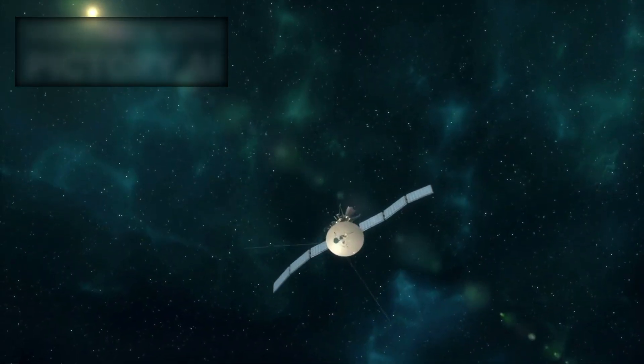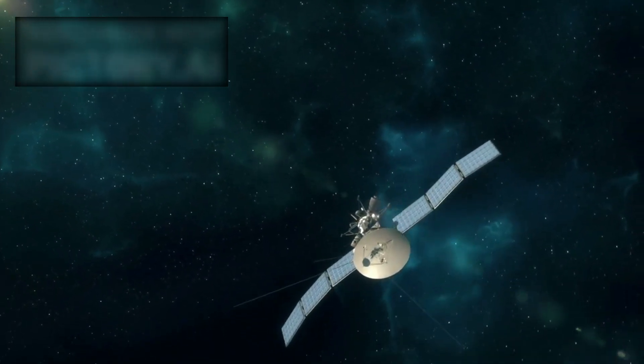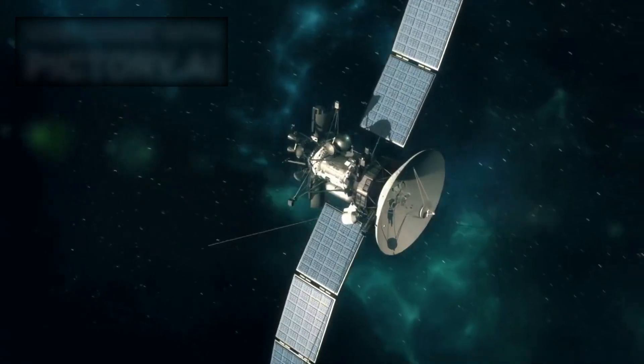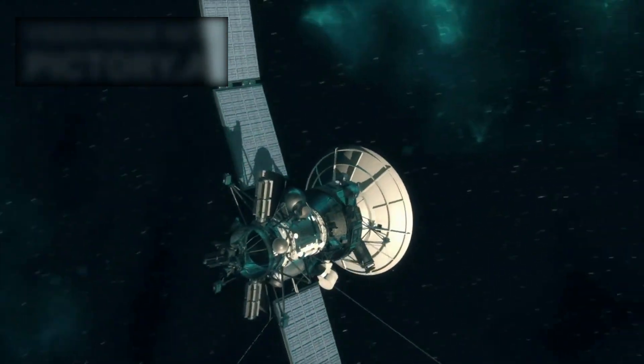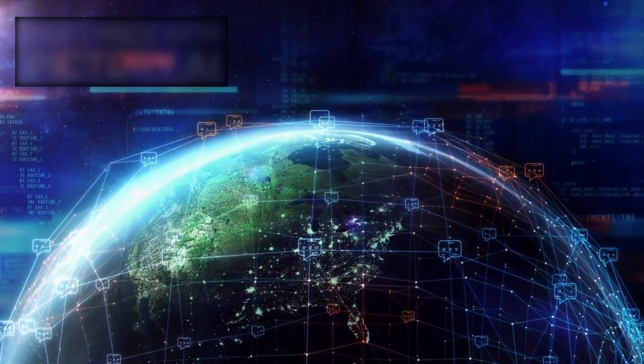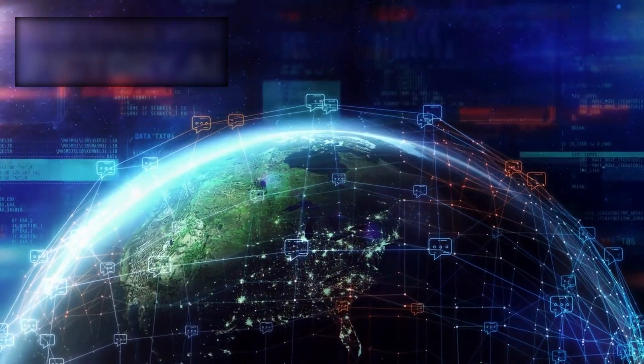With only two probes moving outward and in different directions, the full three-dimensional picture of this frontier remains hidden. Voyager 2's stream of data offers only a glimpse of a vast, unfinished puzzle.